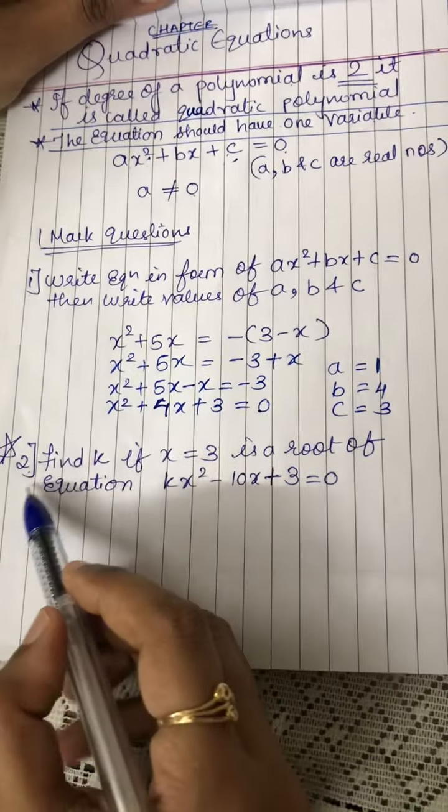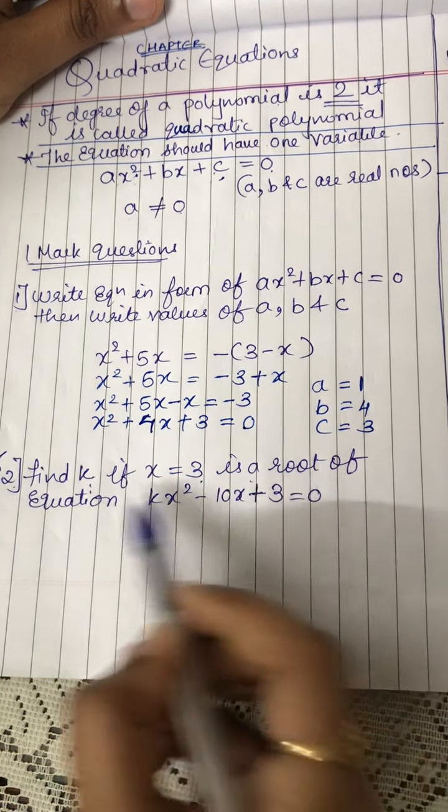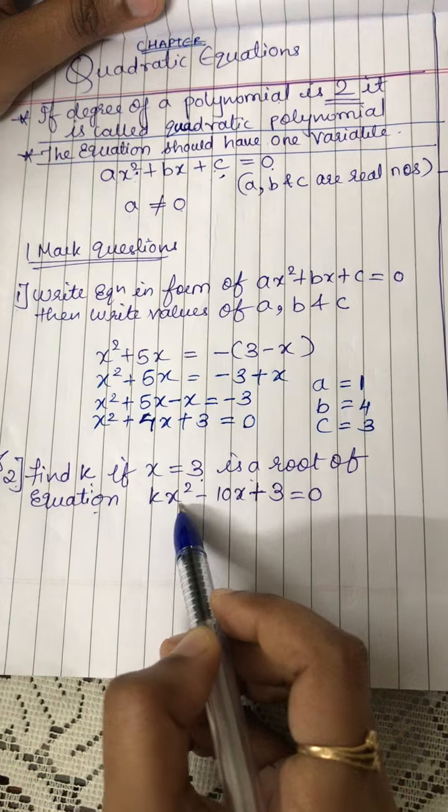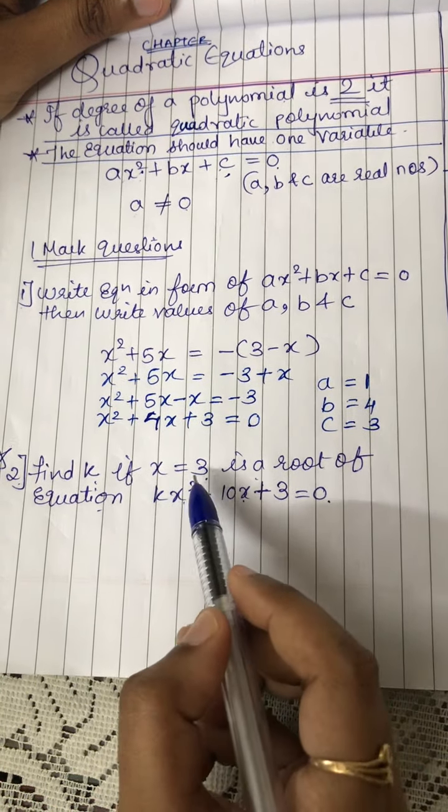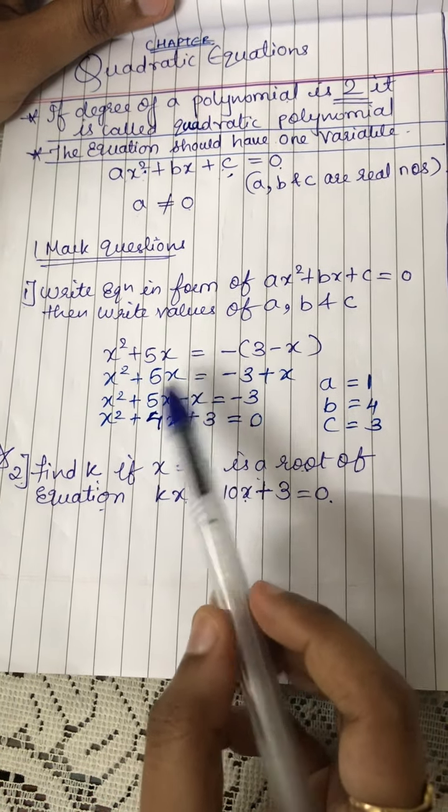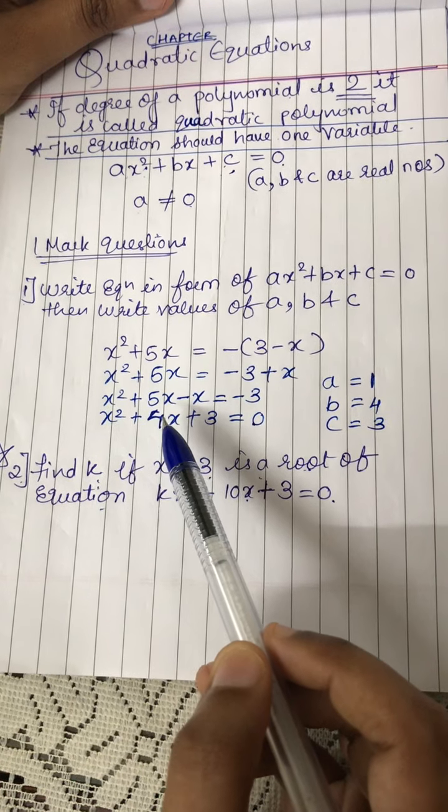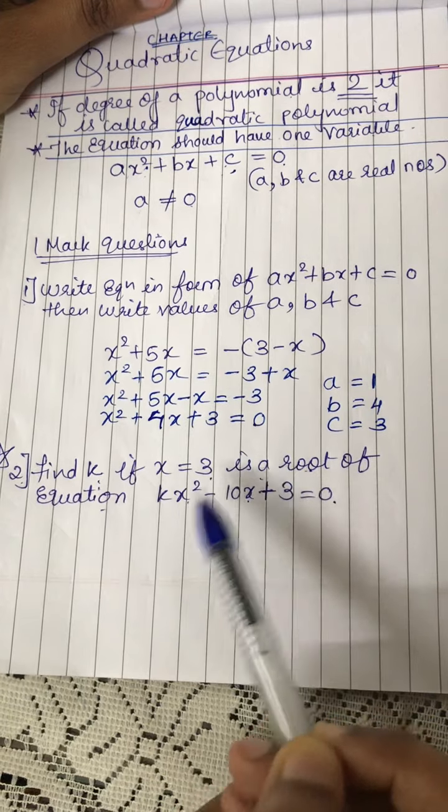Now, the next question is, find k if x is equal to 3 is a root of equation kx square minus 10x plus 3 is equal to 0. What is root? For quadratic equation, the highest degree is 2, so we will get 2 roots. That is, we get 2 values for x. That is the root.